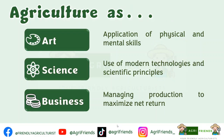Agriculture is considered as an art, science, and business. As an art, it includes the application of physical and mental skills. As a science, it involves the use of modern technologies and scientific principles. And as a business, it focuses on managing production processes to maximize net returns.